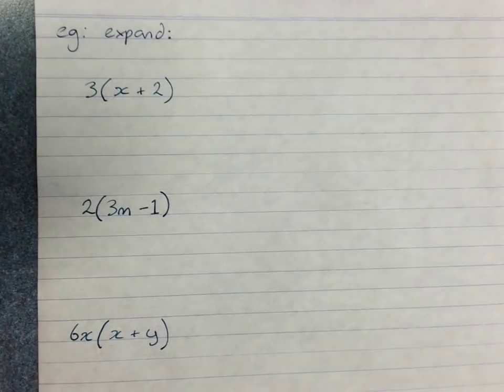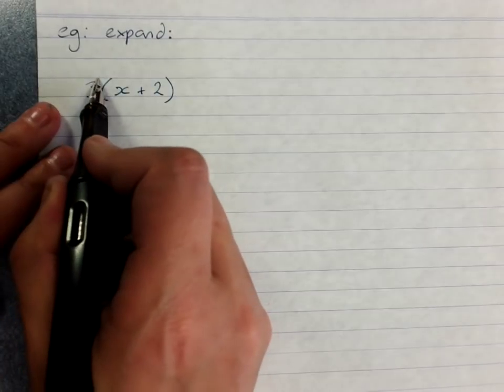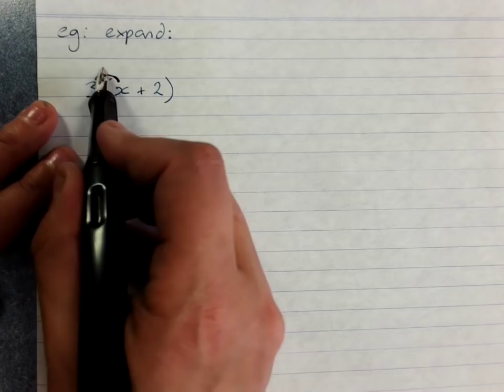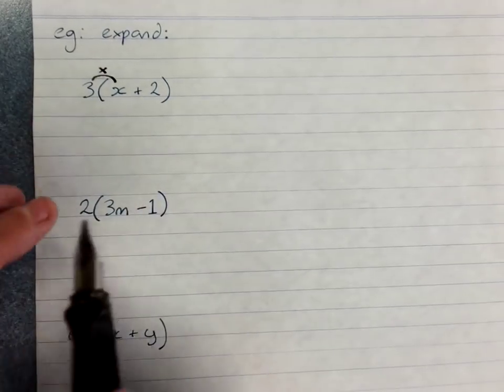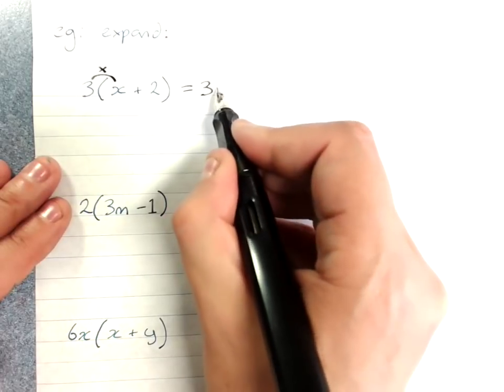Here's some questions that we might get, expand these. And the method that I'm going to need you to follow is draw your arrow from the term outside to the first term and multiply those two together. 3 times x is 3x.